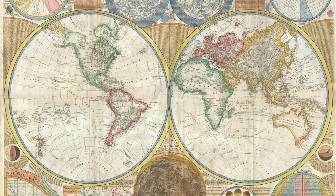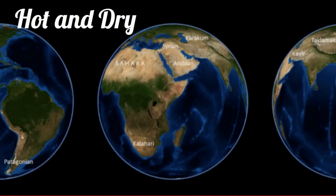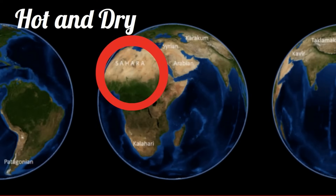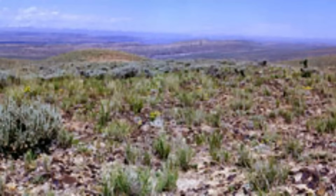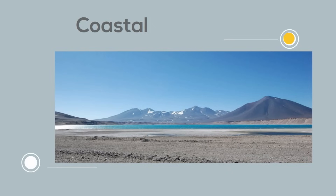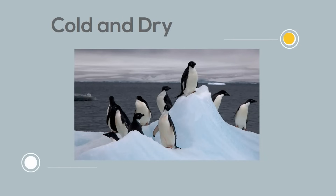There are several types of deserts. A desert can be hot and dry, it can be semi-arid with some shrub brush, you sometimes have coastal deserts, and then you have the very cold deserts like Antarctica.